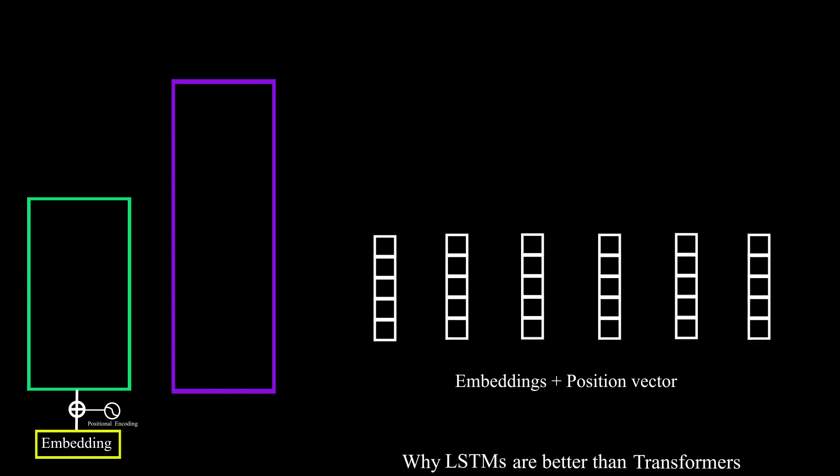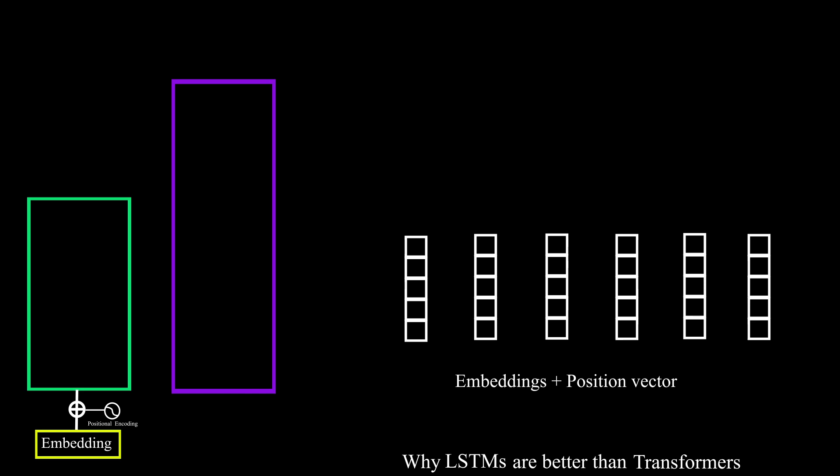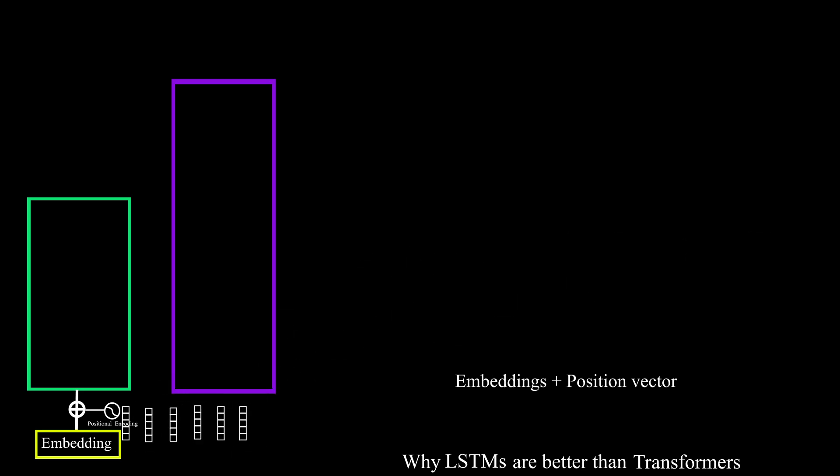So they used sine and cosine waves for every even and odd position of the vector and this is how the transformer retains the information about the order of words in a sentence without doing any sequential operations like RNN. This gives parallelization advantage. And now these outputs will get into the most important part of the model's architecture which is the attention head.